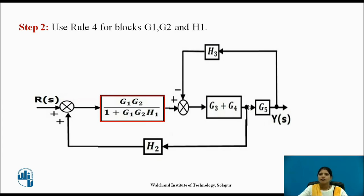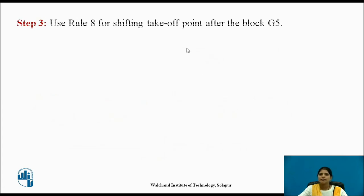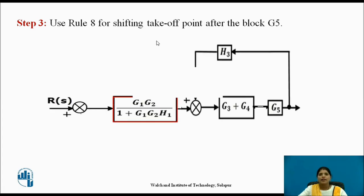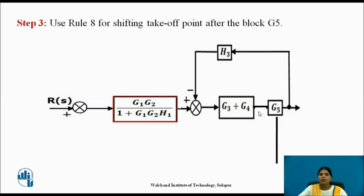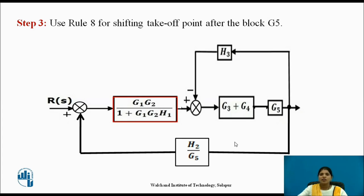Now shift the takeoff point. Use rule 8 for shifting the takeoff point after block G5. This takeoff point is shifted after the block. At that time, add a block having a transfer function as the reciprocal of the block — that is, instead of H2, write H2 upon G5.